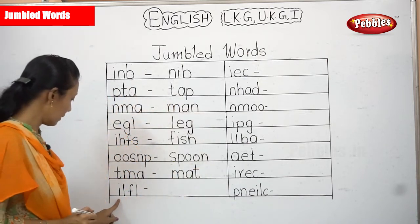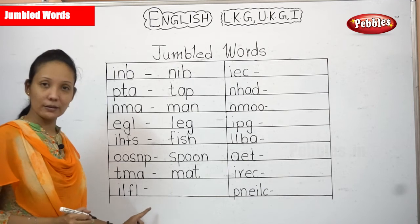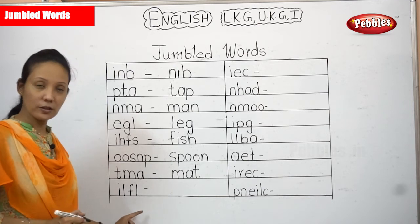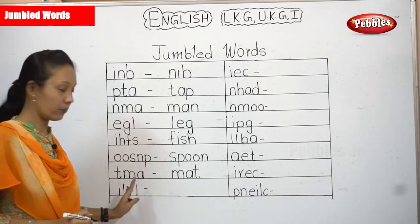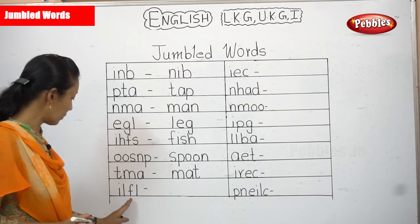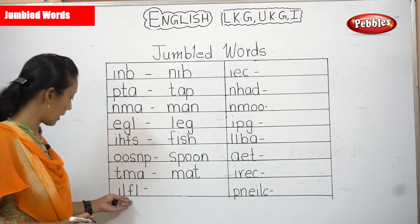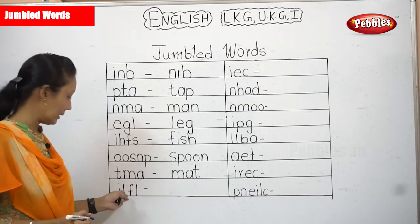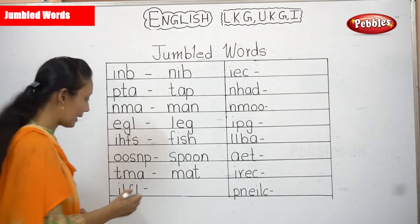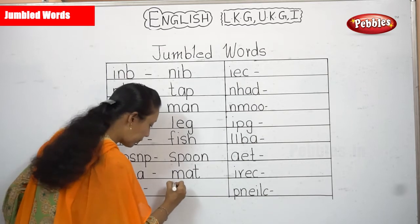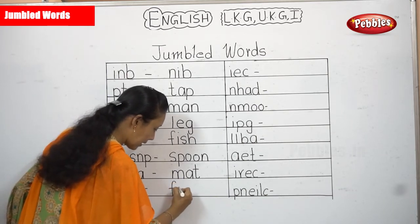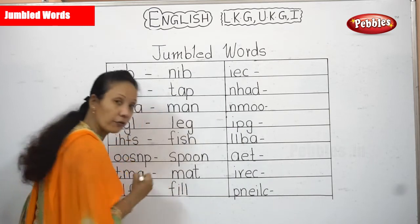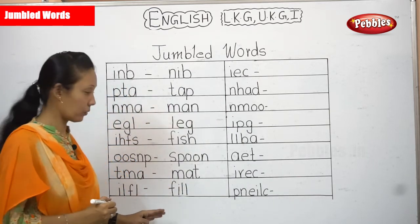Next one: I, L, F, L — it's a wrong spelling. What about LIF? No. Let's start with F. F, I, L, L — FILL. F, I, L, L — fill. Okay.